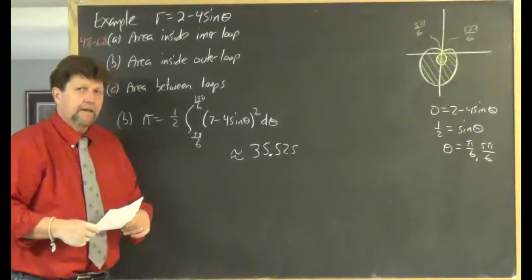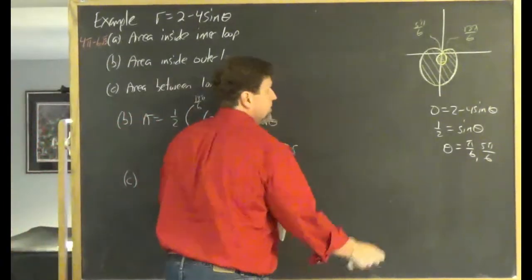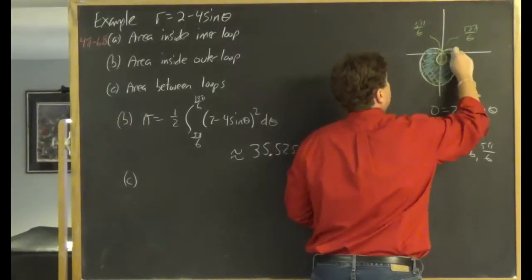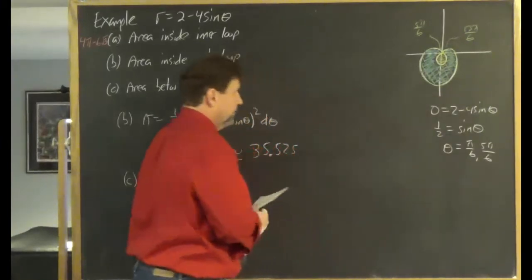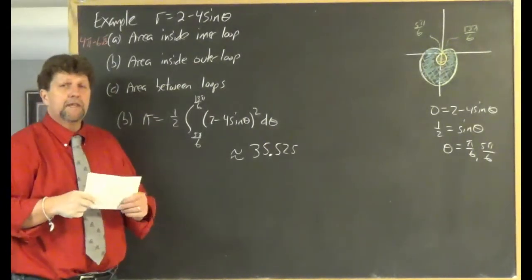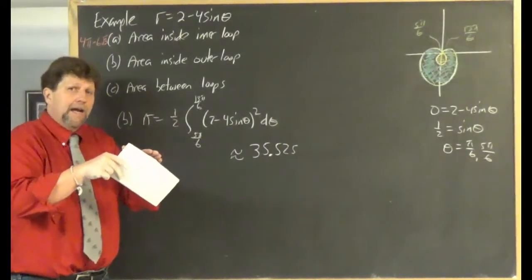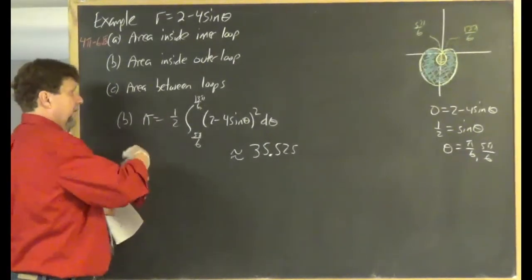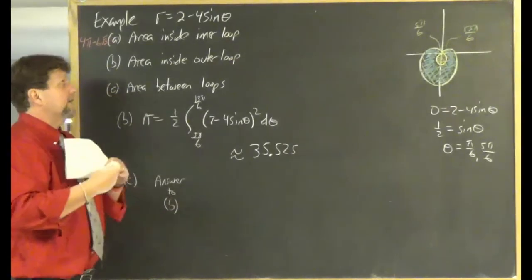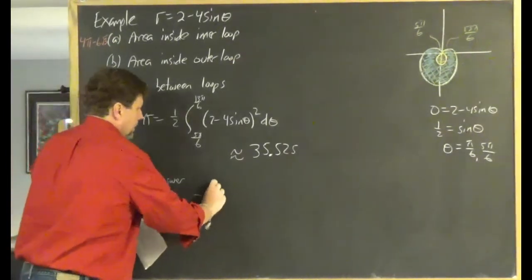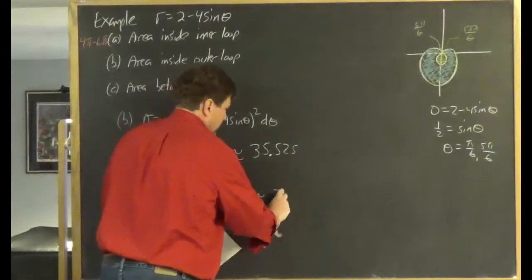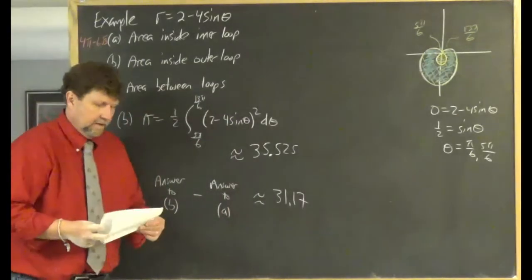For Part C, the area between the loops equals Part B minus Part A: (outer loop area) − (inner loop area). The exact value can be computed; decimally it is approximately 31.17.